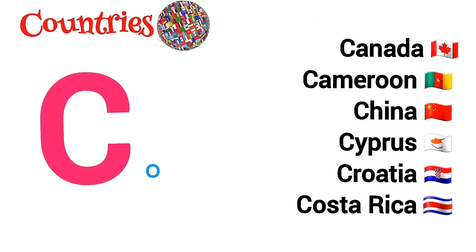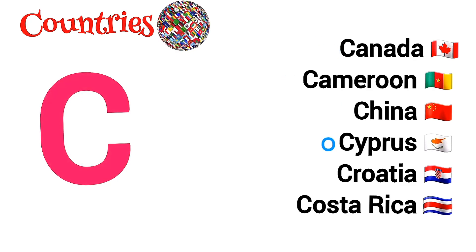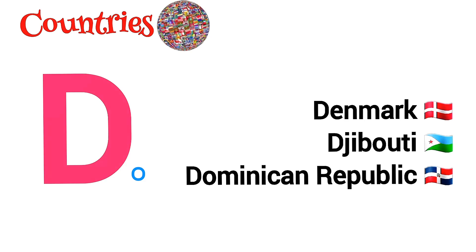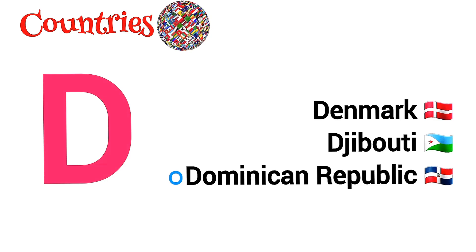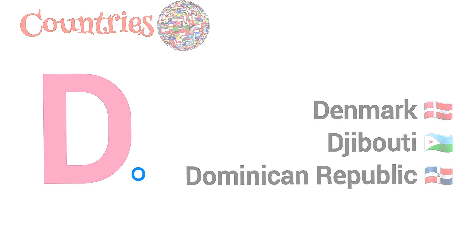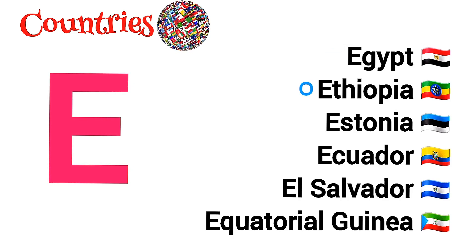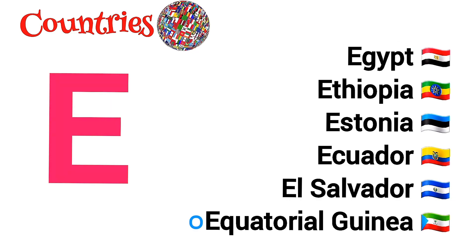C is for Canada, Cameroon, China, Cyprus, Croatia, Costa Rica. D is for Denmark, Djibouti, Dominican Republic. E is for Egypt, Ethiopia, Estonia, Ecuador, El Salvador, Equatorial Guinea.